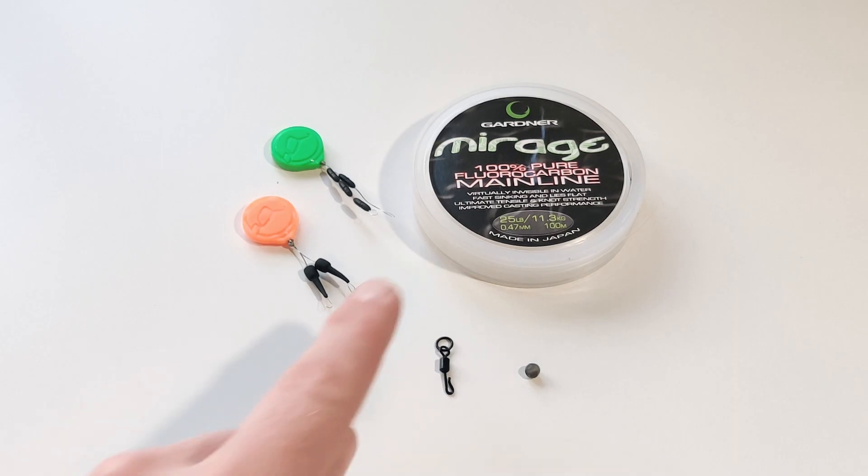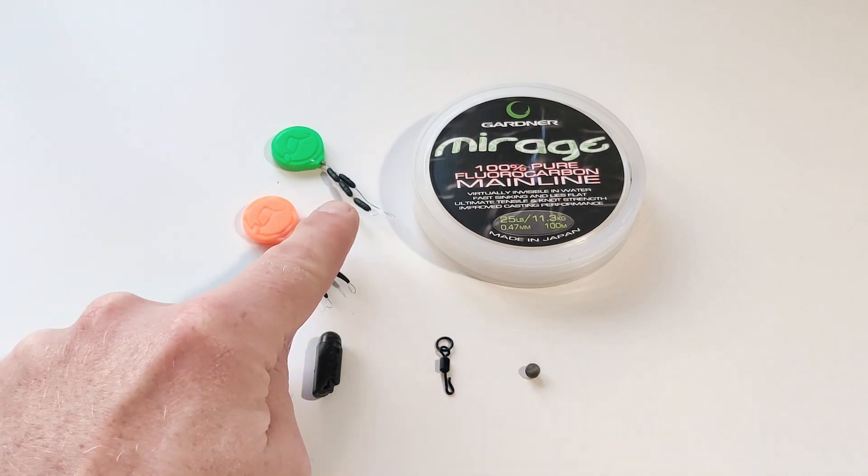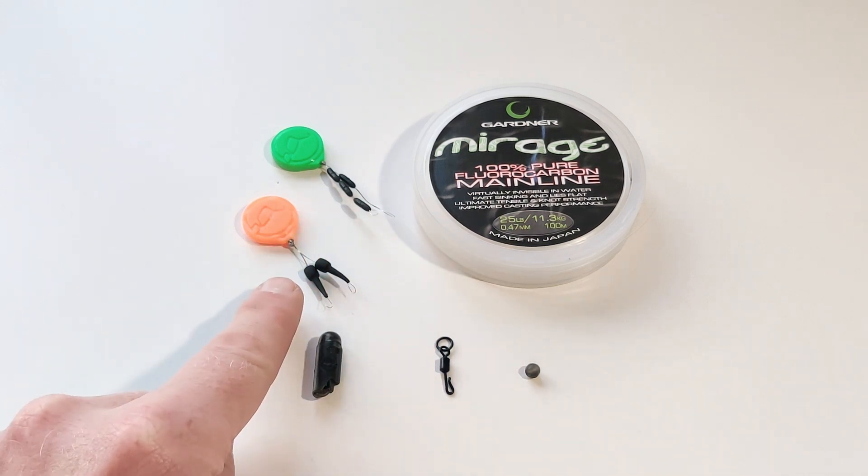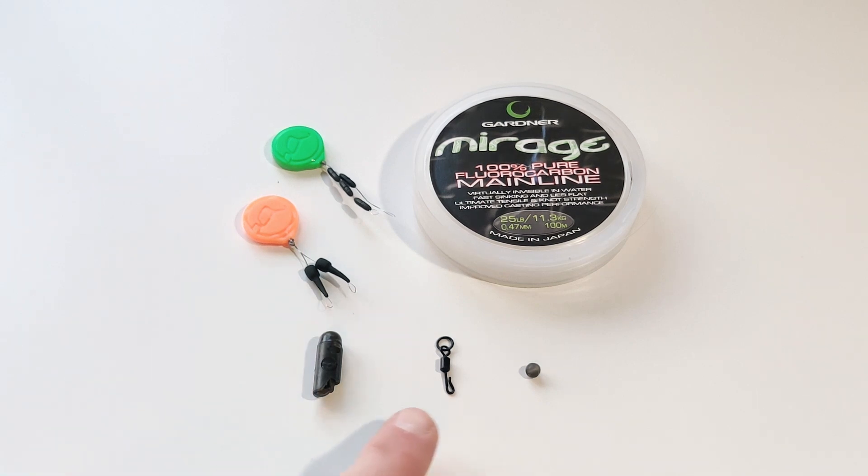So the items you'll need are some fluorocarbon material, some large tungsten sinkers, some line saver beads, a heli safe, a quick change ring swivel and a 5mm rubber bead.